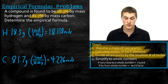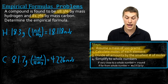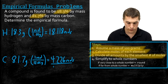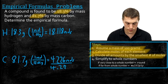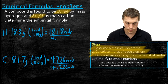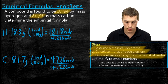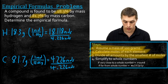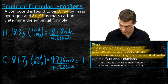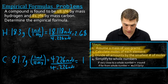Step three: divide all amounts by the smallest number of moles. The smallest is carbon at 4.226 moles, compared to hydrogen at 18.118 moles. So we divide both numbers by 4.226. Carbon gives us 1, and hydrogen gives us 2.68.